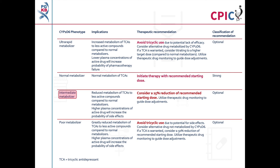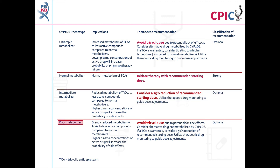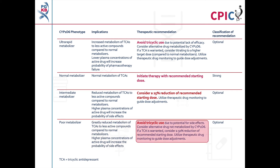Patients with a CYP2D6 intermediate metabolizer phenotype will have reduced metabolism of TCAs to less active compounds. A 25% reduction in the recommended starting dose should be considered for these patients; this is an optional recommendation. Patients with a CYP2D6 poor metabolizer phenotype will have greatly reduced metabolism of TCAs to less active compounds. Use of TCAs should be avoided in these patients. If use of a TCA is warranted, a 50% reduction in the recommended starting dose should be considered; this is also an optional recommendation.